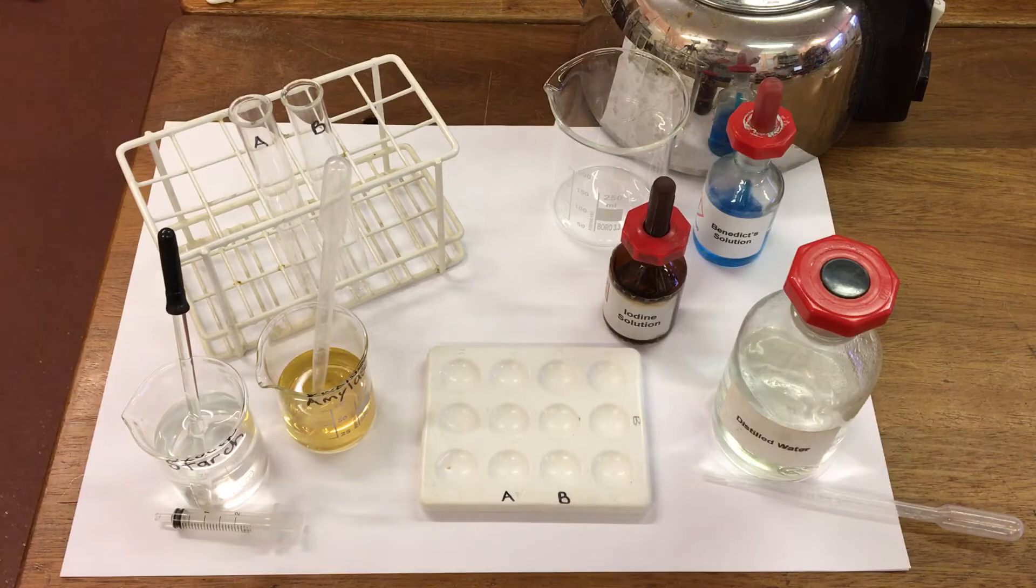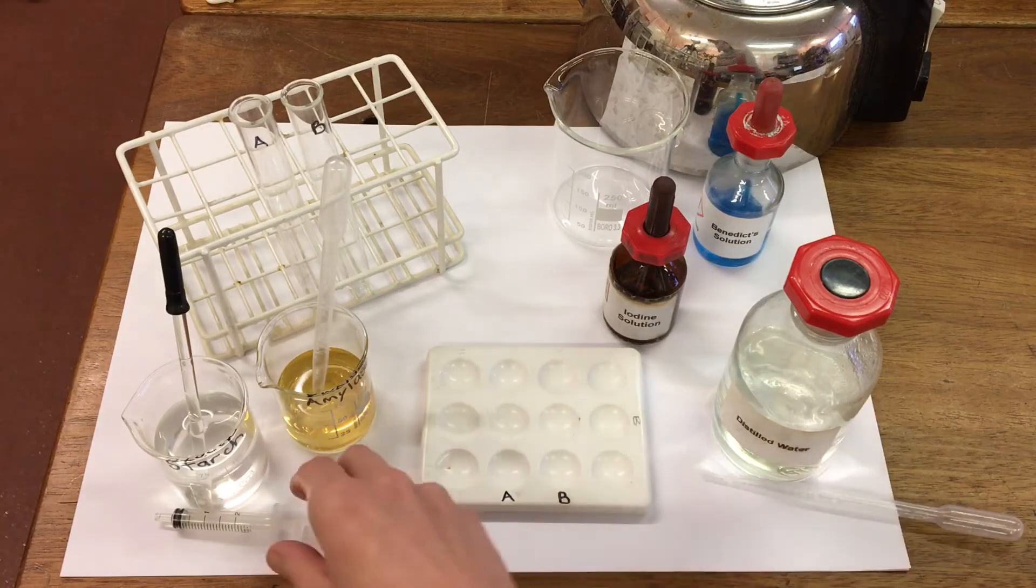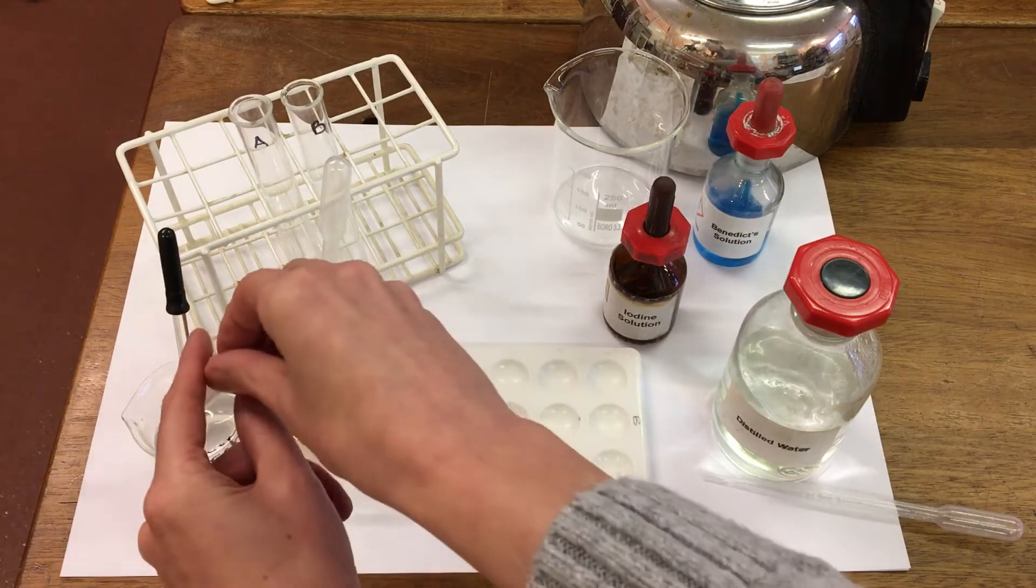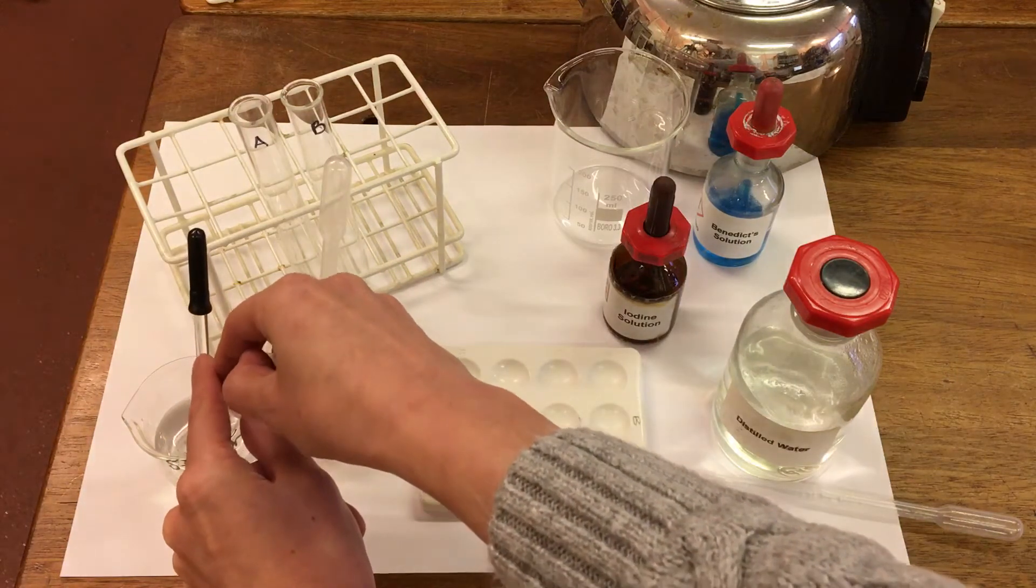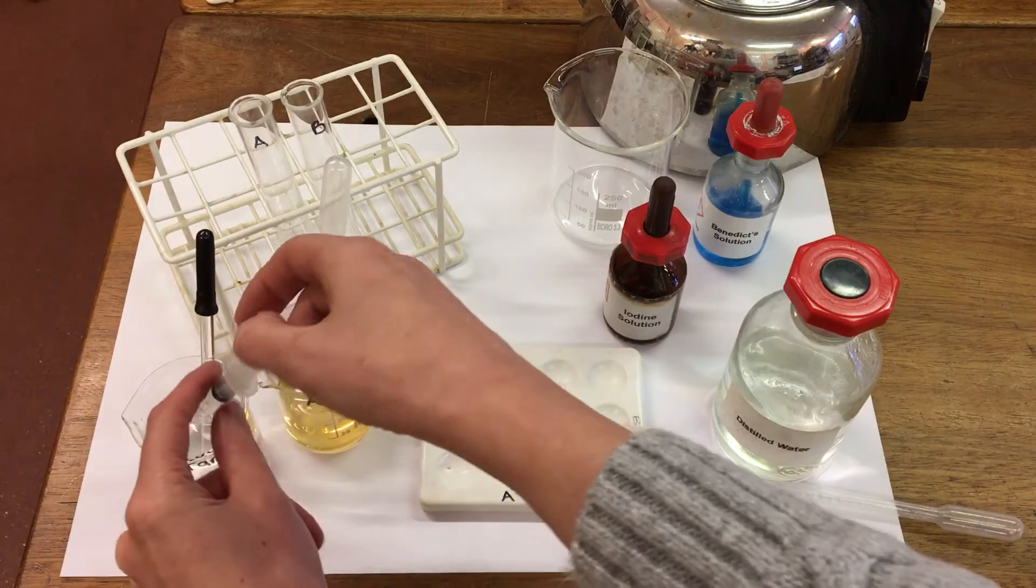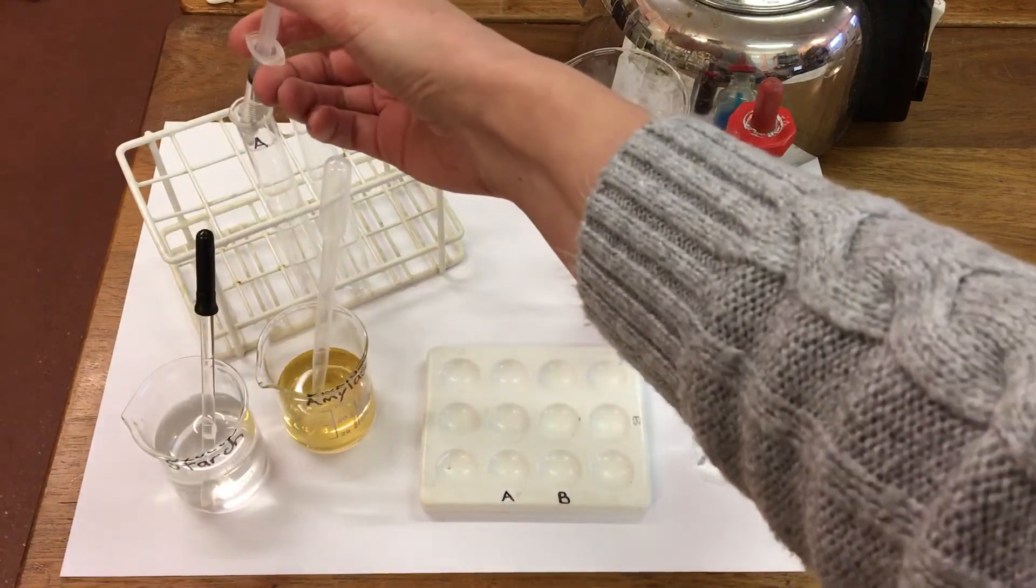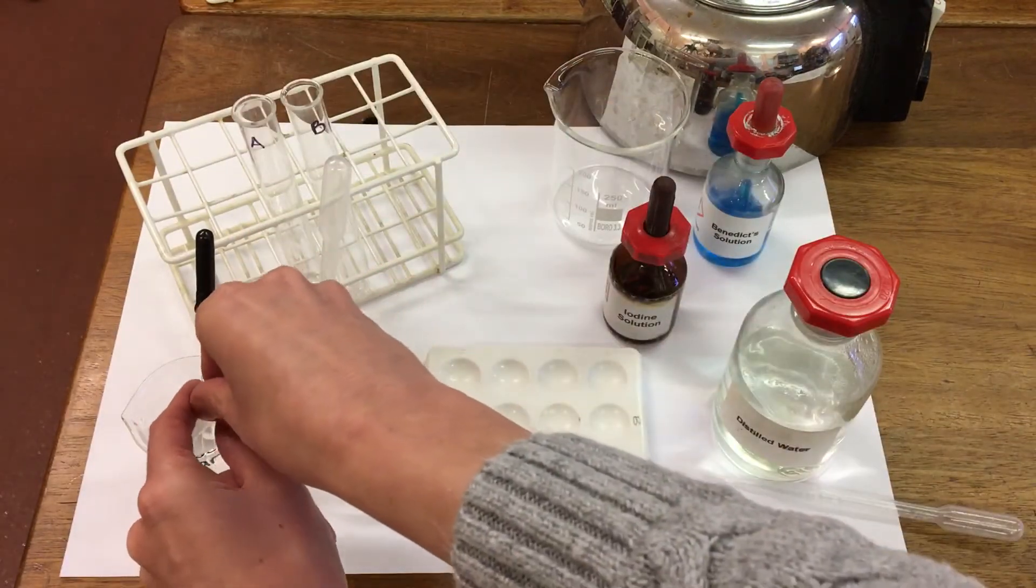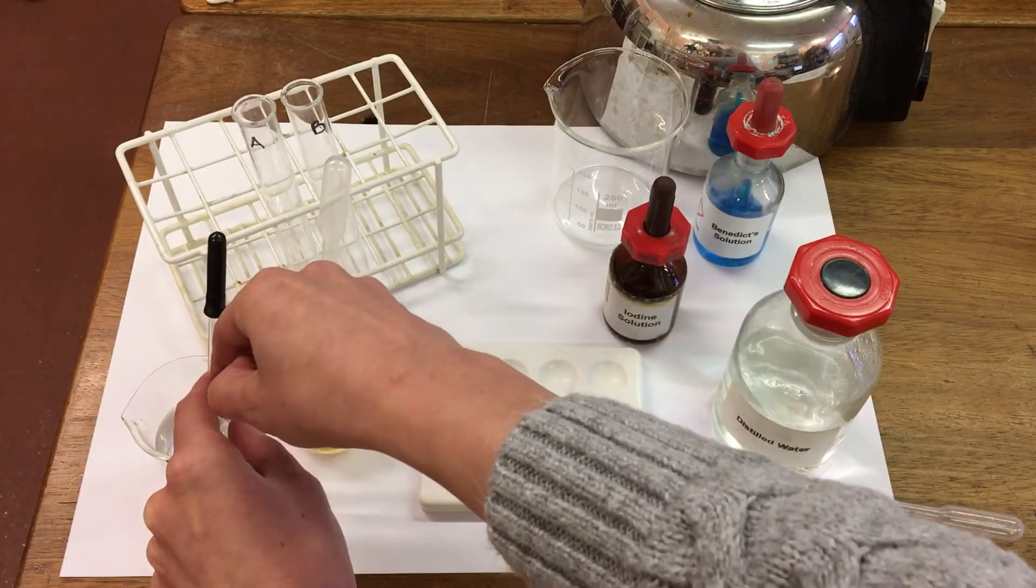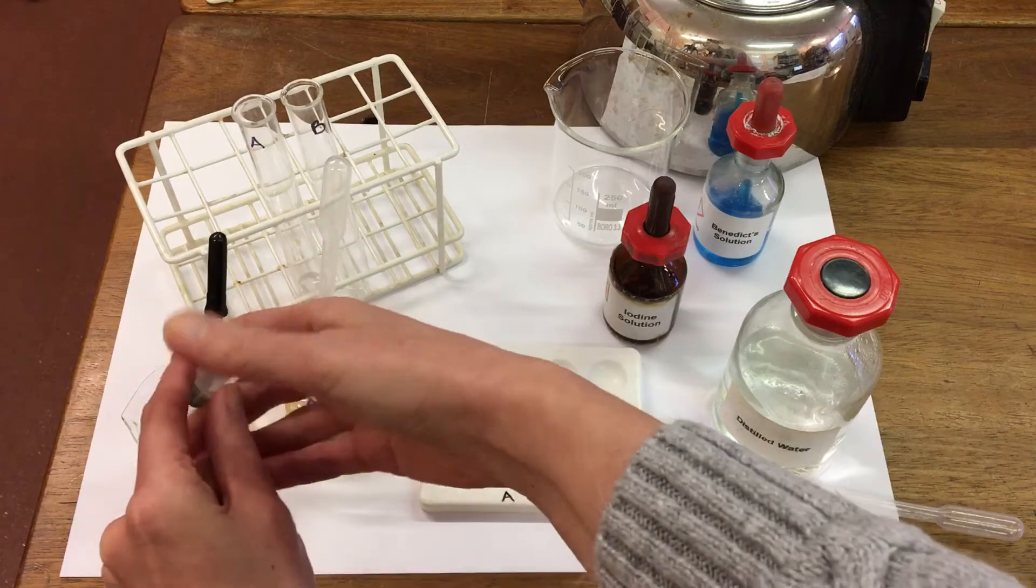So first of all, I'm going to set up some test tubes containing starch. I'm going to add 2 ml of our starch solution to test tube A and 2 ml of the starch solution to test tube B.